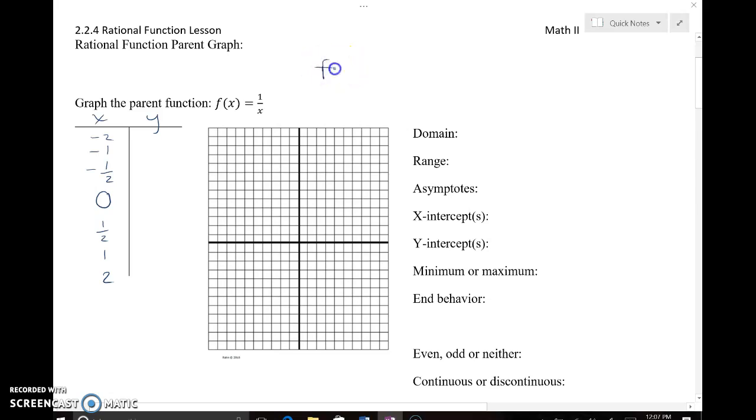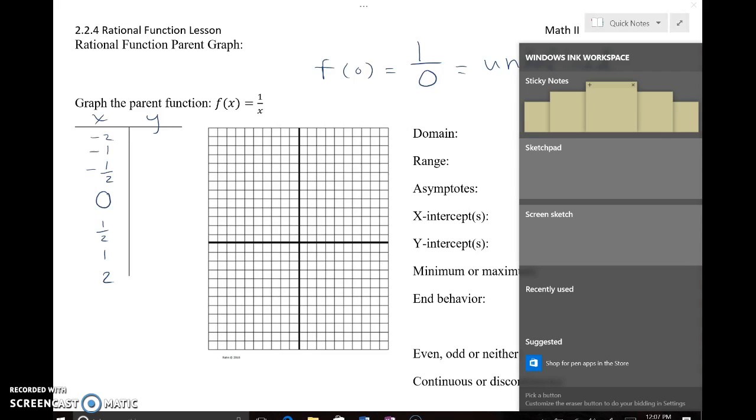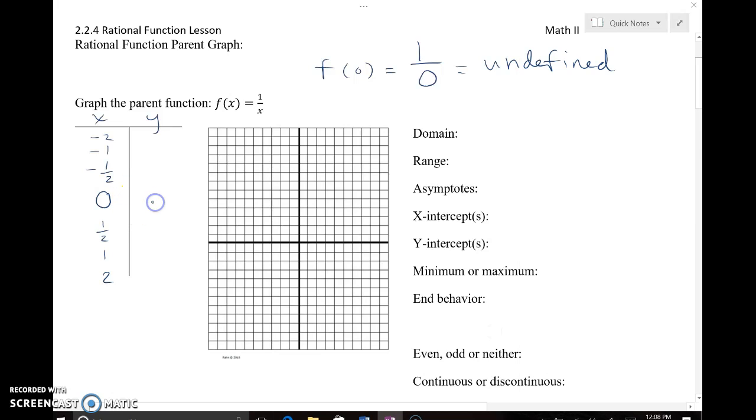If I wanted to substitute and find out what the y value is when x is 0, this is what it would look like. Now a lot of you have probably recognized that's a problem immediately because we can't divide by 0. If I ask you to make groups of 0 of something, you couldn't do that because the idea of 0 is that there's nothing there, but the idea of groups or dividing by something is that you need multiple items from a larger set. These two concepts work against each other. So this is actually undefined in our real number system. We will not have a y value here.